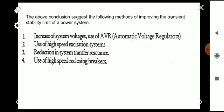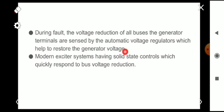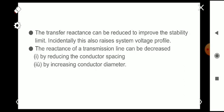Modern exciter systems having solid state controls quickly respond to voltage reduction. Solid state devices are used in that excitation, so it will sense the voltage reduction and act accordingly. Another important point is the reduction of transfer reactance. Transfer reactance can be reduced to improve the stability limit instantly. This also raises system voltage profile.